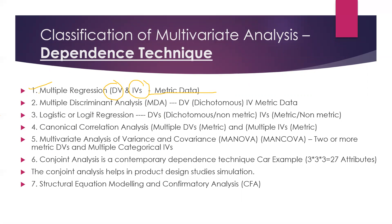For example, FDI is metric data. In multiple regression, if I want to know what factors FDI depends upon, FDI is the dependent variable. Independent variables could be GDP, interest rate, inflation rate, terms of trade, openness — import and export policies. All these factors are what FDI will depend upon. This data can be collected from RBI — it would be metric data.